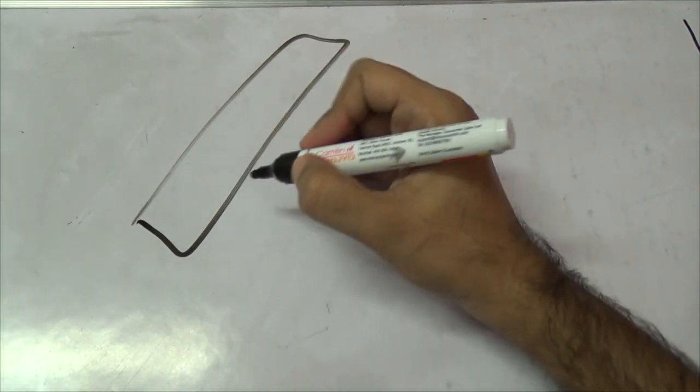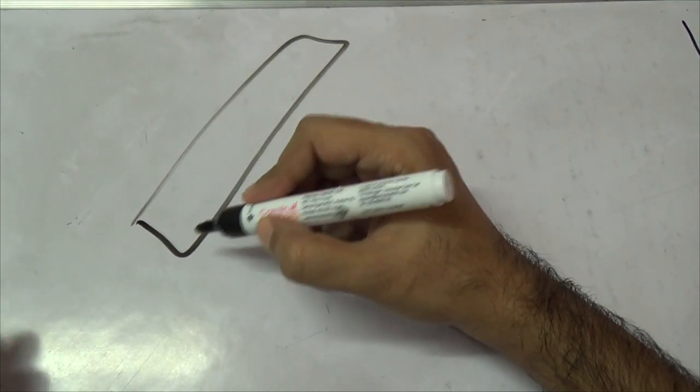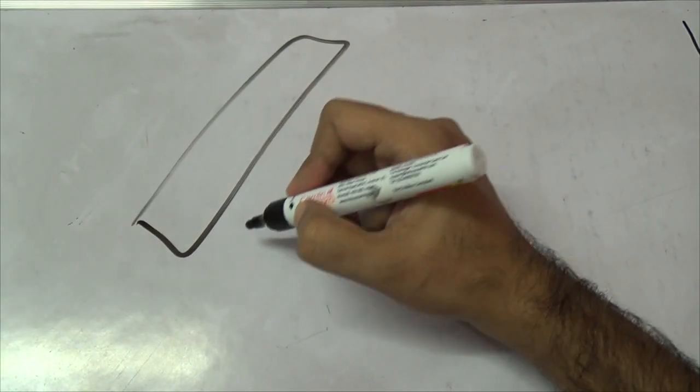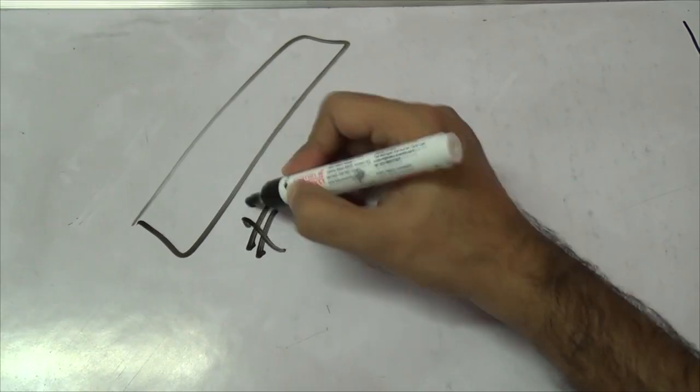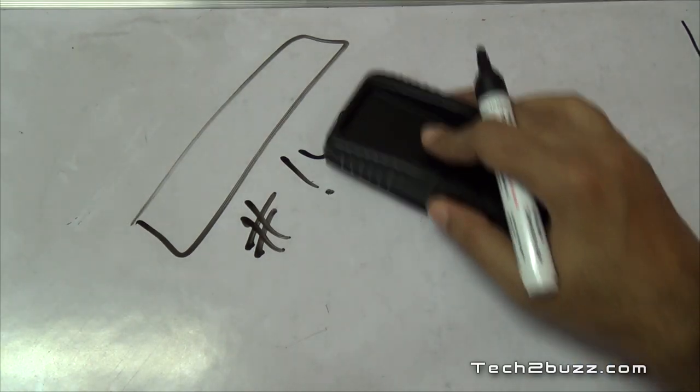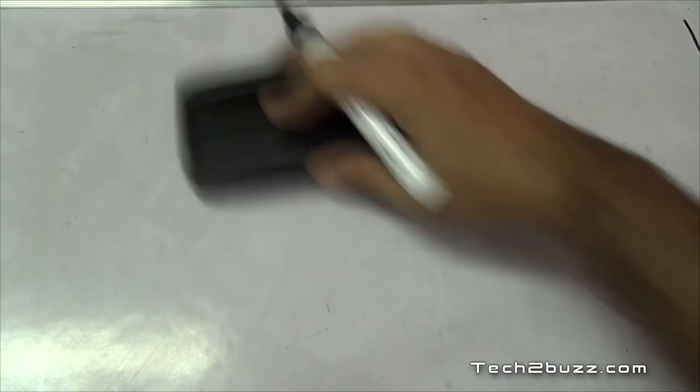The first thing that you should do after you have configured your Wi-Fi router is to secure it. In the area that will ask you to enter a password, give a good password. Don't write your name or stuff like that. Give a good eight character password and have some special characters in that, so that your network is secure.